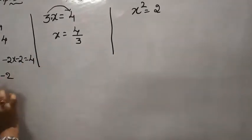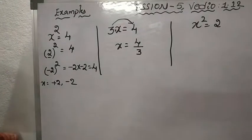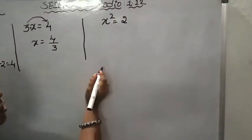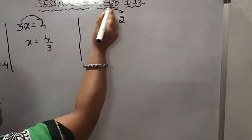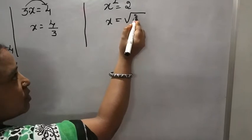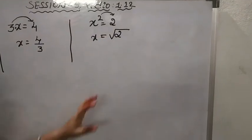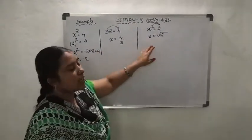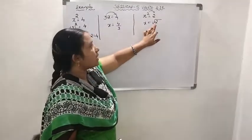Observe these two examples: we can locate plus 2, minus 2, and 4 by 3 on the number line. But now consider x squared is equal to 2. If we take the square root of both sides, we get x equals root 2. Can you locate root 2 on the number line? No, we can't. When we can't locate numbers on the number line, such type of numbers are called as irrational numbers.